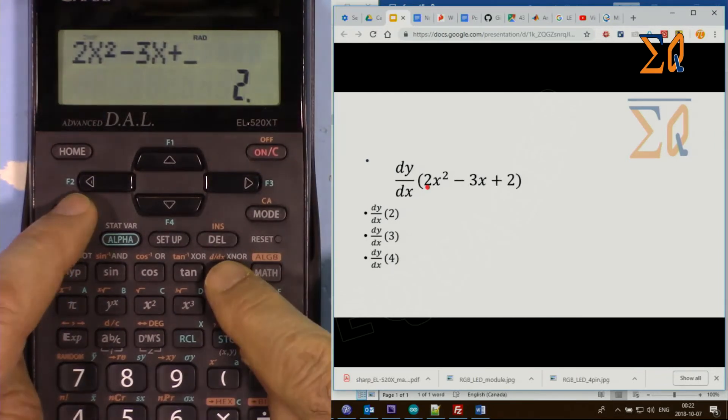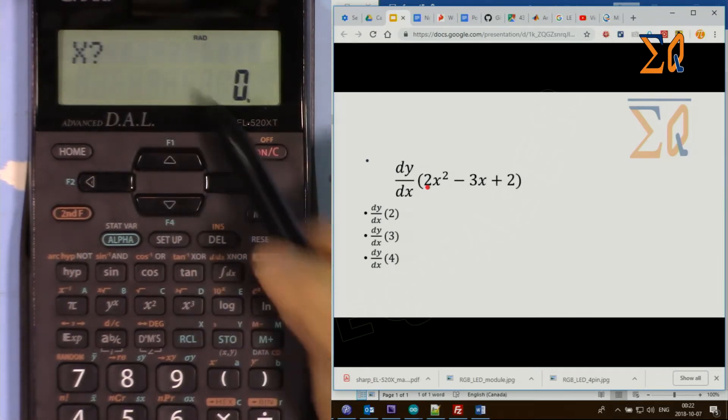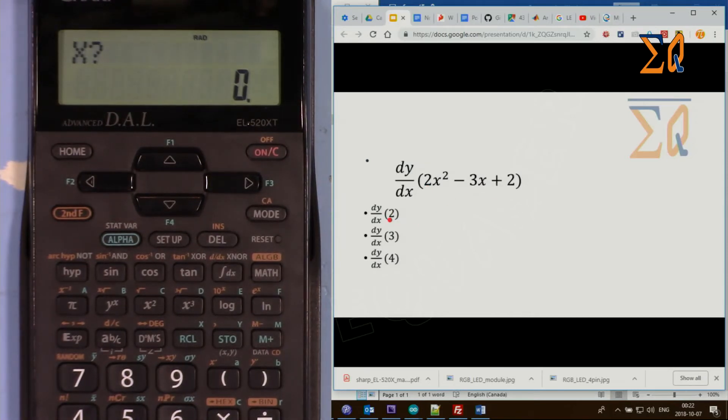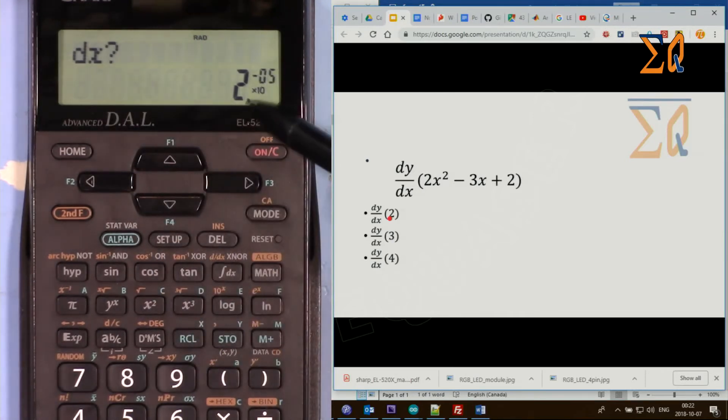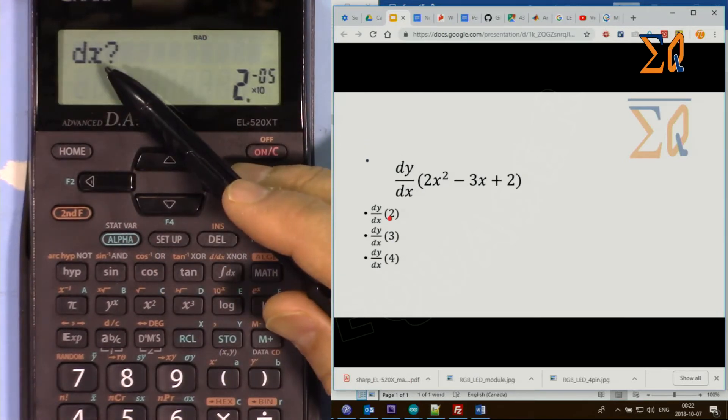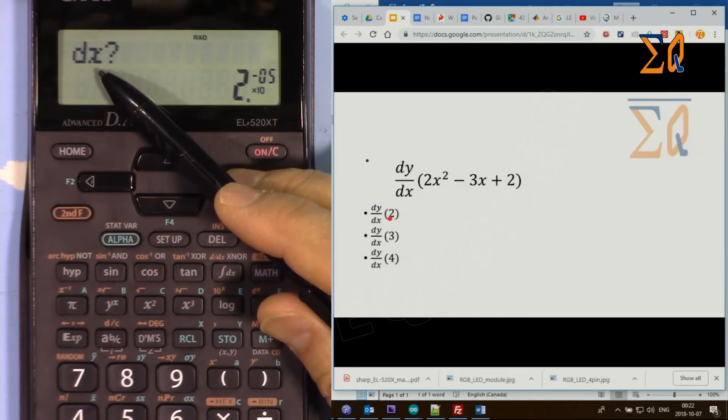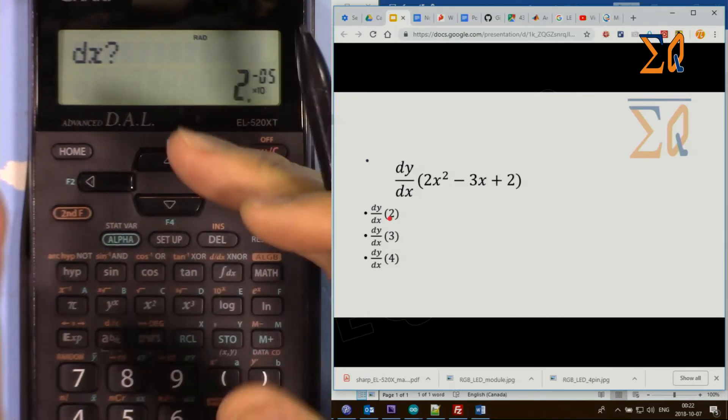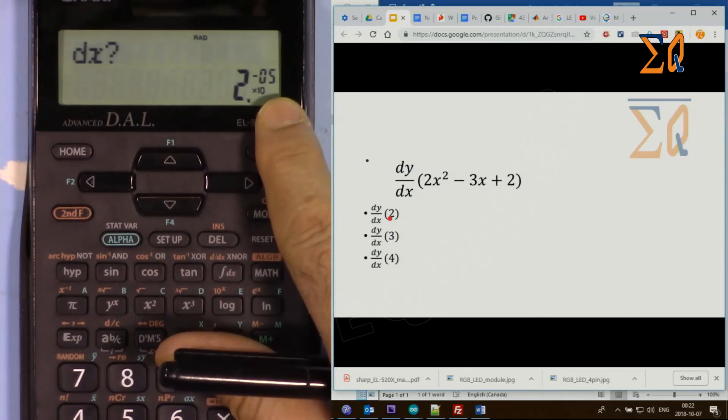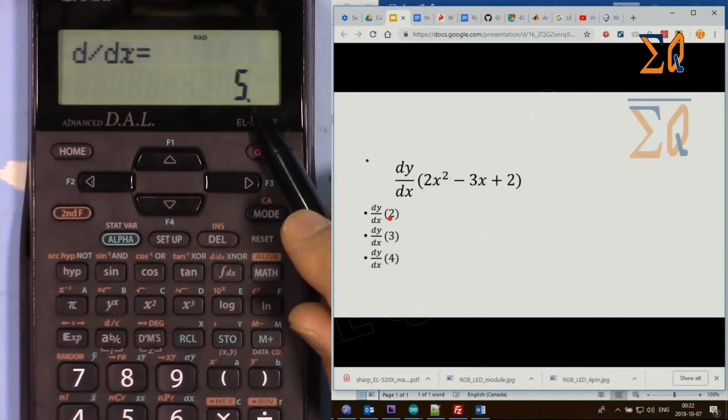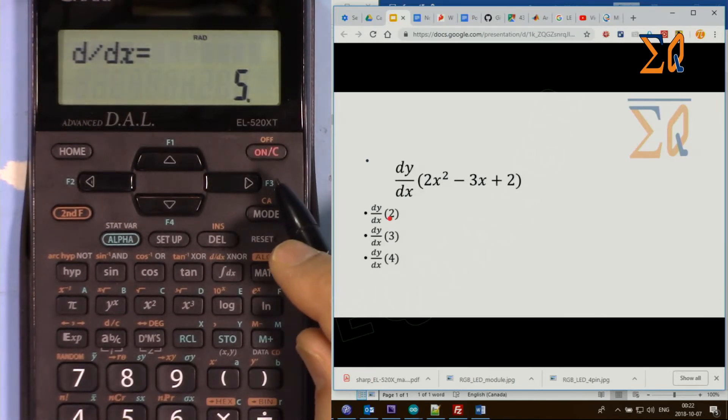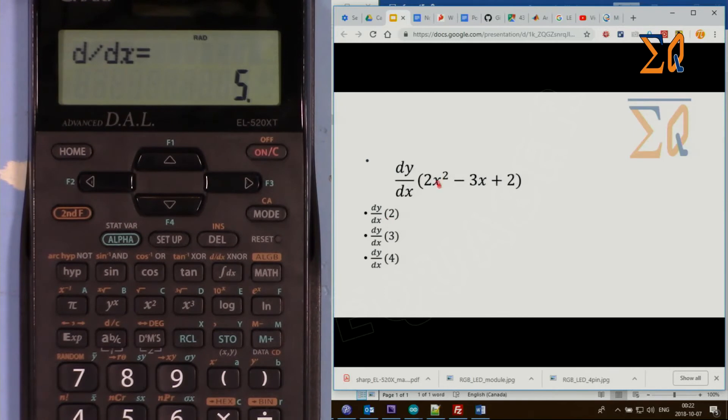So second function, d/dx. Now it says what is X - so this is our X, which is 2. And this value is the dx that they put in the calculation. This is 2 × 10⁻⁵ - that's okay. The answer is 5. It calculated very quickly.